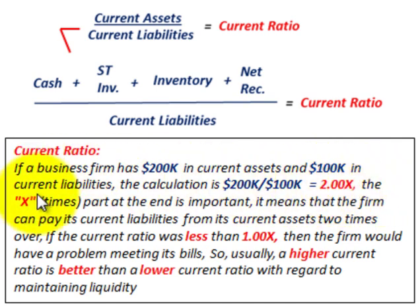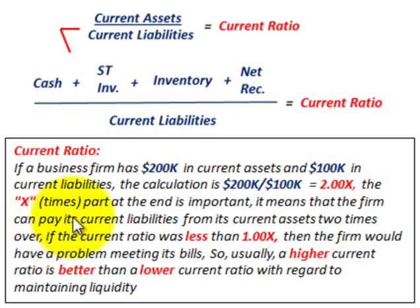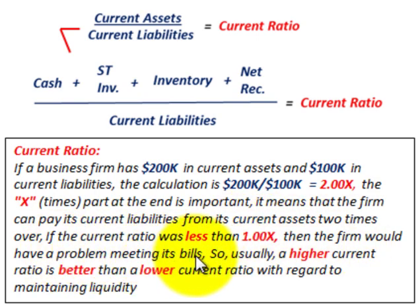The 'times' part at the end is important — it means that the firm can pay its current liabilities from its current assets 2 times over. It has current assets worth more than its current liabilities. If the current ratio were less than 1 times, the firm would have a problem meeting its bills. Usually a higher current ratio is better than a lower one for maintaining liquidity.